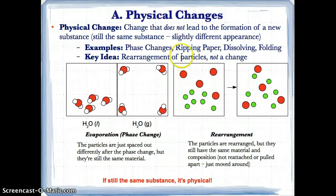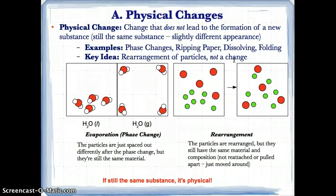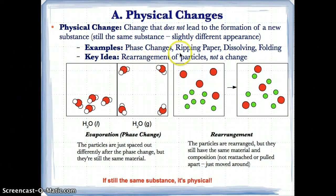The two main examples to focus on are phase changes and dissolving. If you change the state of matter, you're not changing the fact that it's the same substance — you're just changing it into a solid, liquid, or gas. Dissolving just means you're mixing physically, not changing the composition. The key idea is you're rearranging the particles but not changing what the substance is.